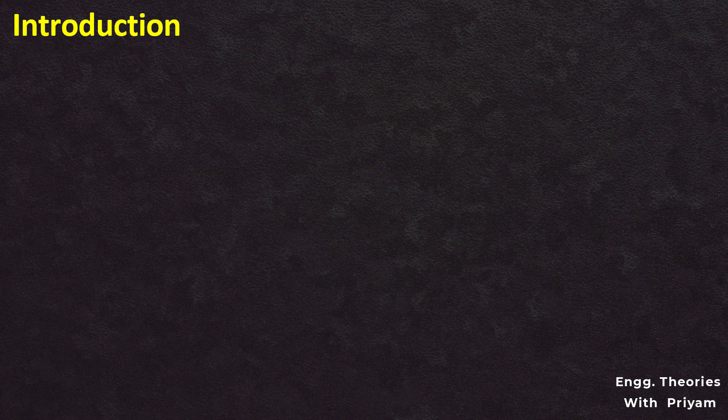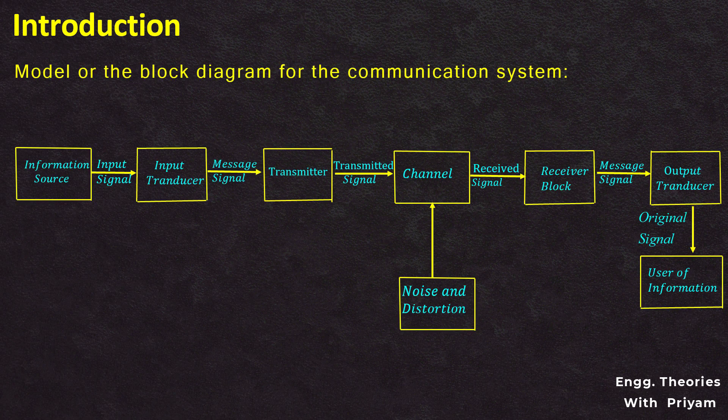In this lecture we will discuss the demodulation process of the SSBSC modulated signal. In the transmitter section of a communication system, SSBSC modulation is used to shift the message signal's maximum frequency fm to a higher or lower frequency using the carrier frequency plus or minus fc. The signal is then transmitted through the channel to the receiver, which must demodulate it to recover the original message signal.